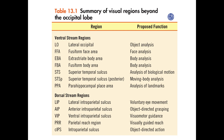Here are some specific regions the ventral and dorsal streams project to. You don't have to memorize all of these, but one I do want to go over because I find it super fascinating is the fusiform face area — you can see it labeled here as FFA.